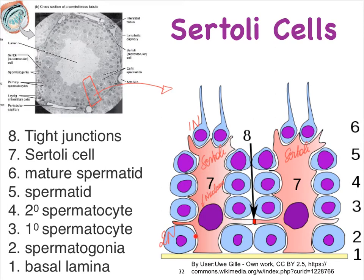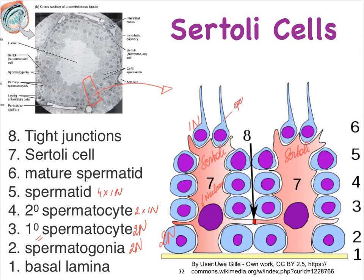The spermatogonia are going to eventually get ready to enter meiosis, so they will become primary spermatocytes, which are still diploid. The primary spermatocyte is a copy of the spermatogonium that is now ready to kick into the reduction phase of meiosis. At the end of the reduction phase, we end up with two haploid secondary spermatocytes. Once they continue with the replication phase, we end up with four haploid spermatids, which when they mature further become spermatozoa.